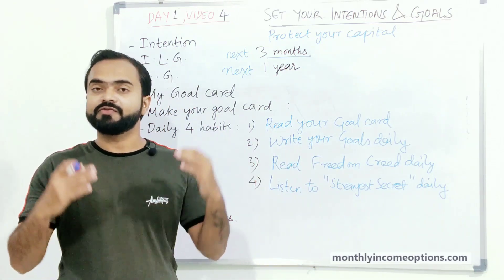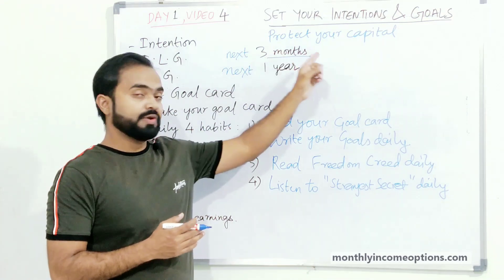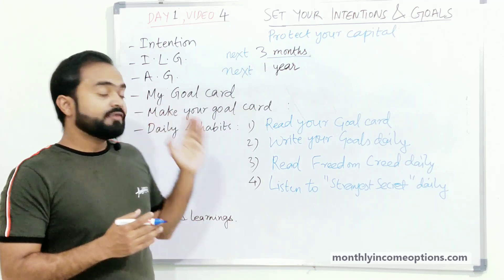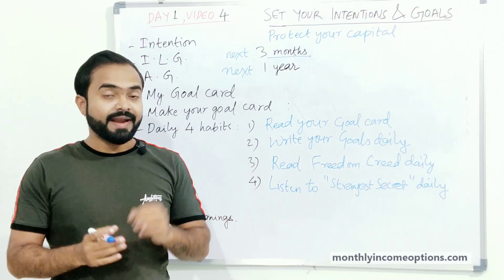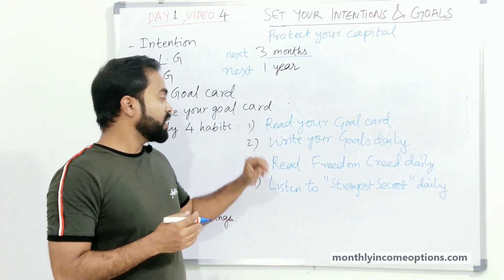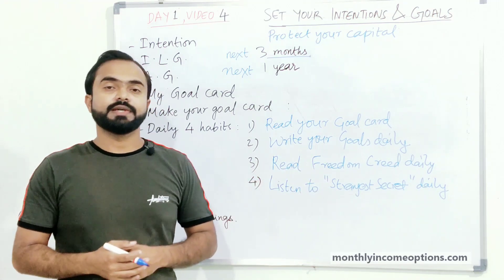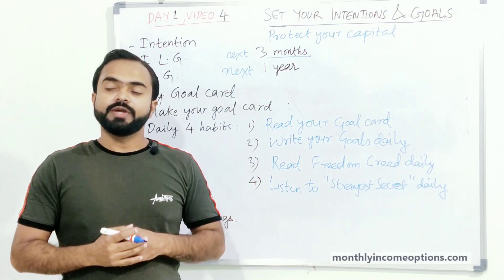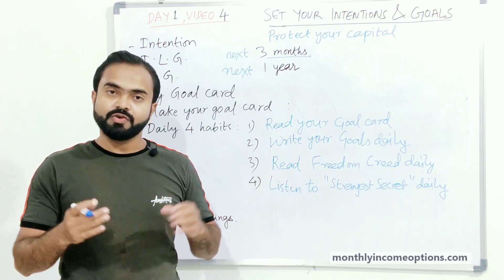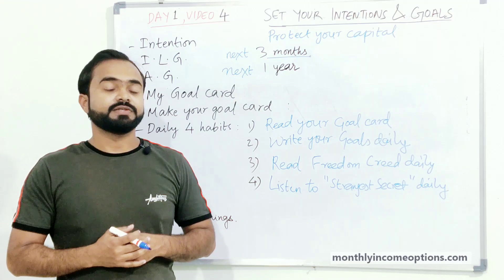So these are the four habits to include in your daily routine. Do this for the next 30 days and you will see the difference. To recap: our intention is to protect your capital; we have two goals — Immediate Lifestyle Goal for three months and Aspiration Goal for one year; and the four habits are: read your goal card, write your goals daily, read the Freedom Creed daily, and listen to the Strangest Secret daily. Your homework is to print the goal card, write your goal in your own handwriting, take a selfie, and post it in the comment section. See you in the next video.